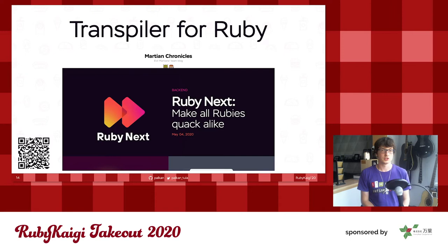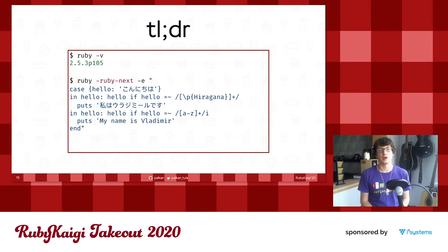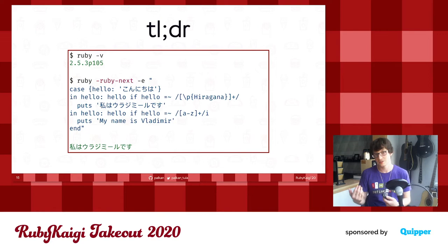Today I'm going to talk about why I decided to build it and how it works. What is Ruby Next in the simplest way? Assume that you have an older Ruby version, say 2.5, and you want to run code with pattern matching in it. If you don't have the Ruby Next switch, it will just raise an exception. But with Ruby Next, it works. That's what a transpiler does for you. It makes it possible to write modern Ruby today — and even yesterday.